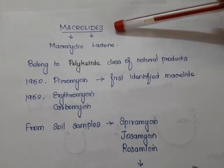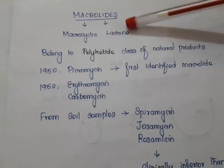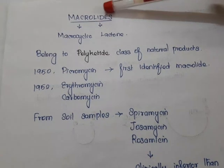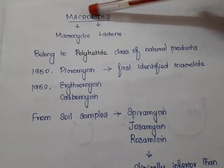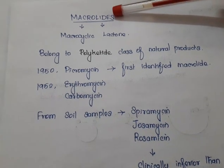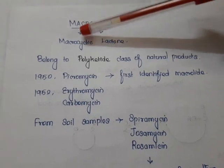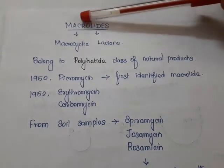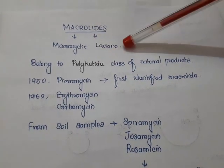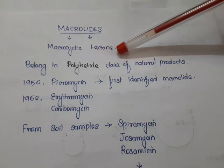Today the topic is macrolides. From the name itself we can say it is a macrocyclic lactone. We can divide the word into two parts: macro and olide. Olide is a lactone, and macro indicates macrocyclic. So macrolides are compounds having a macrocyclic lactone ring in their structure. They belong to the polyketide class of natural products.